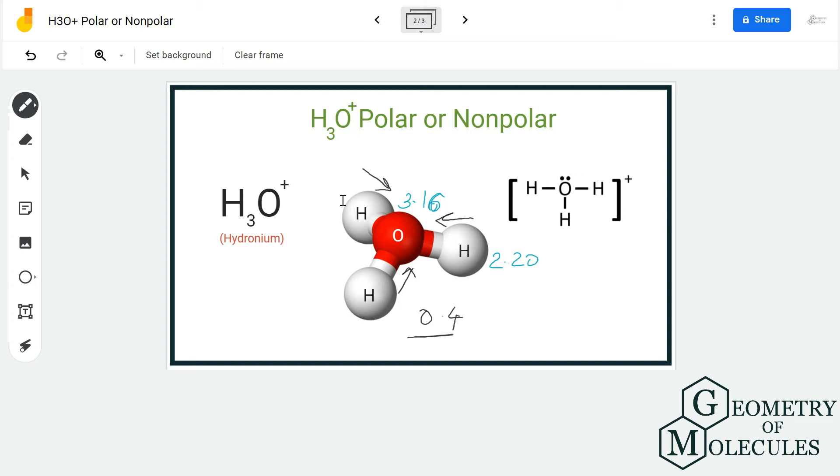Instead of getting nullified, they will be summed up. As there is a net dipole moment in this molecule, there will be formation of poles. The regions around the oxygen atom will have partial negative charges, and the regions around hydrogen atoms will have partial positive charges. So as there are poles formed in this molecule, it is a polar molecule.